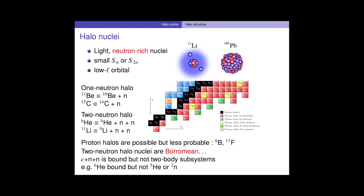Halo nuclei are basically light, neutron-rich nuclei — though less and less light nowadays, as we go to heavier and heavier systems. Up to Neon-31, for example, has been suggested to be a P-wave one-neutron halo nucleus. For the one-neutron halo nuclei, shown in yellow, we have Beryllium-11, which we'll focus on today, and Carbon-15. For the two-neutron halo nuclei, we have Helium-6 and Lithium-11, as was mentioned by Daniel the other day.